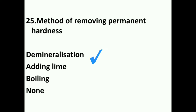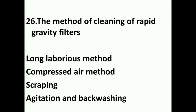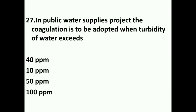Method of removing permanent hardness: the demineralization process. Lime addition and boiling are used for temporary hardness removal. Method for cleaning rapid sand filters: the cleaning method is backwashing — specifically agitation and backwashing. Scrapping is used in slow sand filters. In public water supplies, coagulation is adopted when the turbidity of water exceeds 40 ppm.